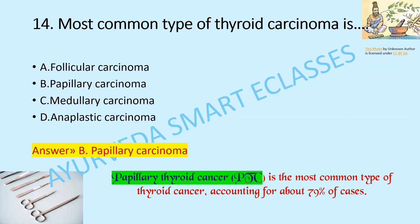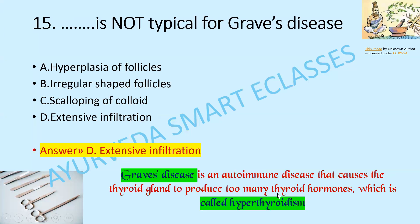The most common type of thyroid carcinoma is papillary carcinoma. Papillary thyroid carcinoma is the most common type of thyroid cancer, accounting for 79%. Regarding Graves' disease, which finding is not typical: hyperplasia, follicular irregular-shaped follicles, scalloping of colloid, or extensive infiltration? The answer is extensive infiltration.